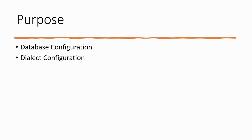The next purpose is dialect configuration. It specifies the database dialect, which determines how hibernate generates SQL statements compatible with the specific database system — for example MySQL, PostgreSQL, or Oracle. The dialect setting is essential for hibernate to translate queries into the appropriate SQL for your database.